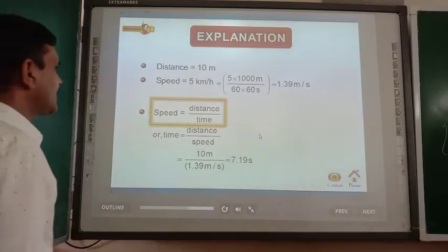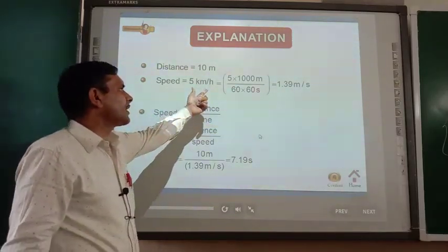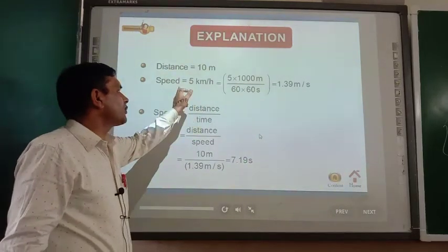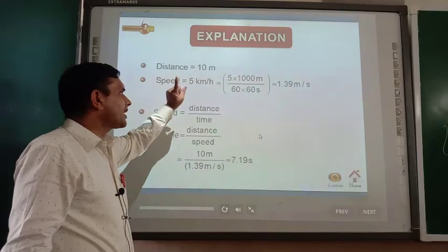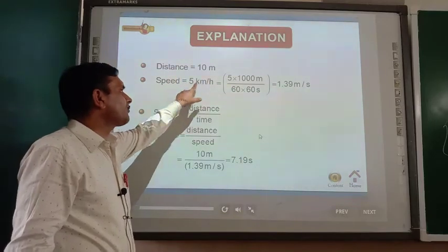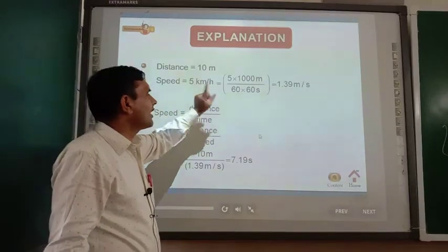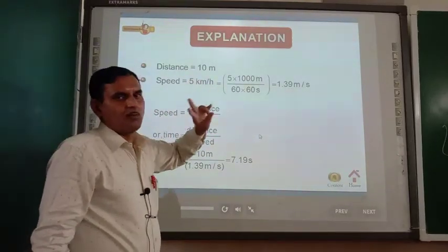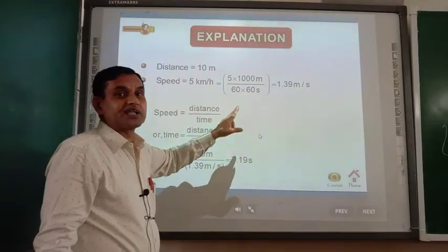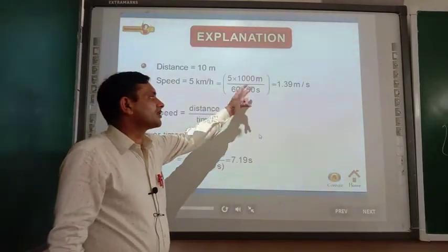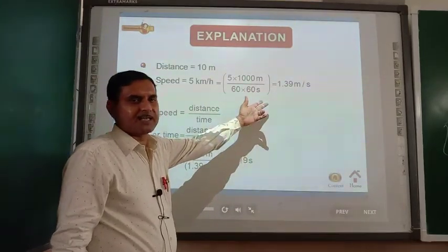Distance equals 10 meters. Speed equals 5 kilometers per hour. To convert to meters per second: 1 kilometer equals 1000 meters, so 5 kilometers equals 5 into 1000 meters. Similarly, 1 hour equals 60 minutes and 1 minute equals 60 seconds, so 1 hour equals 60 into 60 seconds. The speed is now expressed in meters per second.